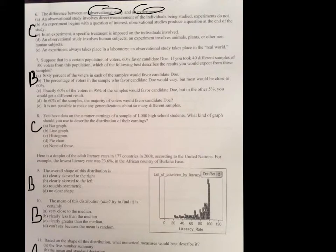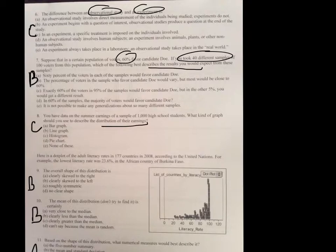Number seven, it basically says which of the following best describes the results. Well, if you take 40 different samples, we've already established that the percentage is going to be 60%. So, 40 different samples could possibly give 40 different percentages, but they should all be relatively close to 60%. On number eight, what kind of graph should you use to describe the distribution of earnings? In this case, we're going to use a histogram. Remember, a histogram is ranges, so you can have a range of salaries.